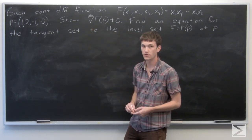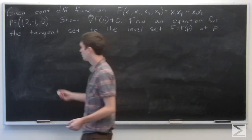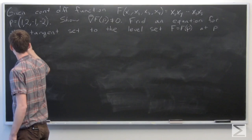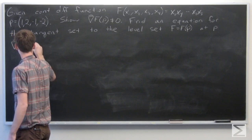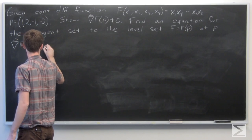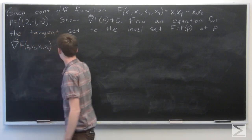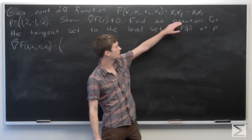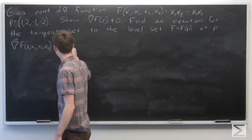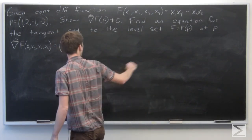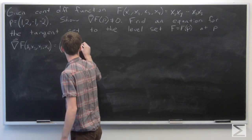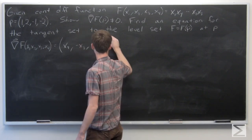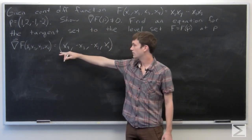So first let's show that the gradient vector of f at p does not equal zero. We can calculate the gradient vector: the partial derivative of f with respect to x1 is x4, the partial derivative with respect to x2 is negative x3, then negative x2, and x1.